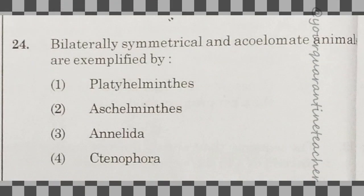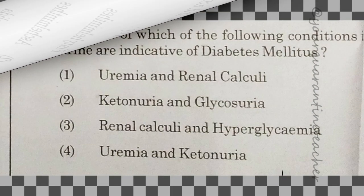24th question: bilaterally symmetrical and acoelomate animals are exemplified by — option 1 — Platyhelminthes. That is the answer.